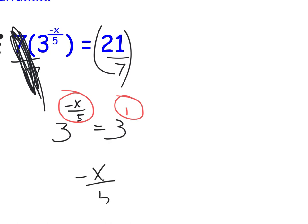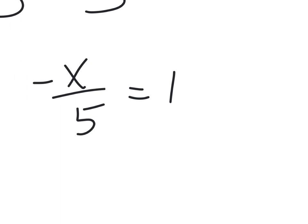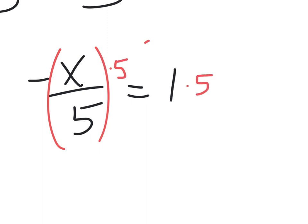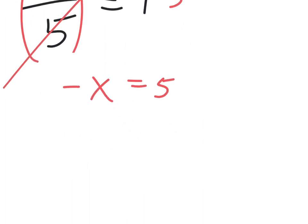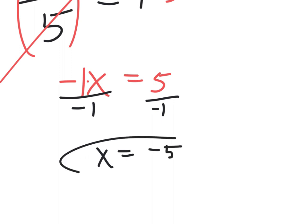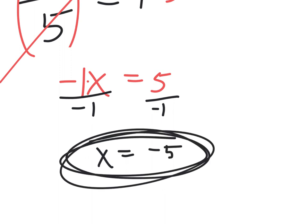Negative x over 5 equals 1 — you kick into, okay, if you can factor it, you should. Well, there's no factoring, but there is clearing fractions. You should have multiplied by 5 on both sides. The first thing you do is look for factoring; the second thing is look to clear fractions. If there are any fractions, clear them. Now I have negative x equals 5 — then how do I get rid of a negative 1? You could have multiplied by negative 1 also, and the answer either way is negative 5.